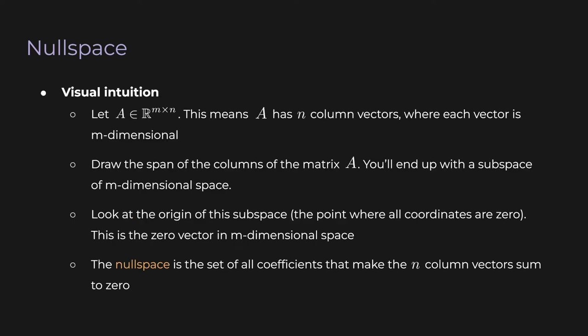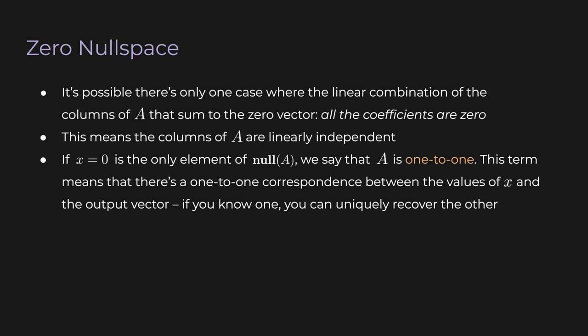To get a grasp on this abstract definition, here's some visual intuition. Our matrix A has n column vectors, each vector being m-dimensional. Imagine drawing the span of the columns of A — you'll end up drawing a subspace of m-dimensional space. Now look at the origin of this subspace — it's going to be the zero vector of m-dimensional space. The null space is just the set of all coefficients that make the n column vectors of A sum to zero. It's possible that the only combination of coefficients that makes the column vectors add to zero is the zero vector of n dimensions — meaning the columns of A are independent.